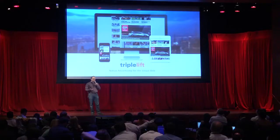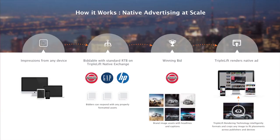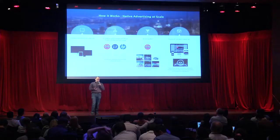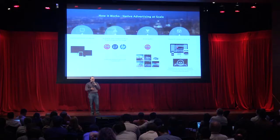That's a very computer vision intensive task. We're an RTB platform, meaning every impression bought and sold on TripleLift is bought through real-time bidding. When an impression comes in, us and all our partners who want to buy native advertising bid in real-time based on what they think that user is worth at that time of day on that page, based on all the information they know about that user. It has to be renderable in real-time at impression time to look great on each particular website.